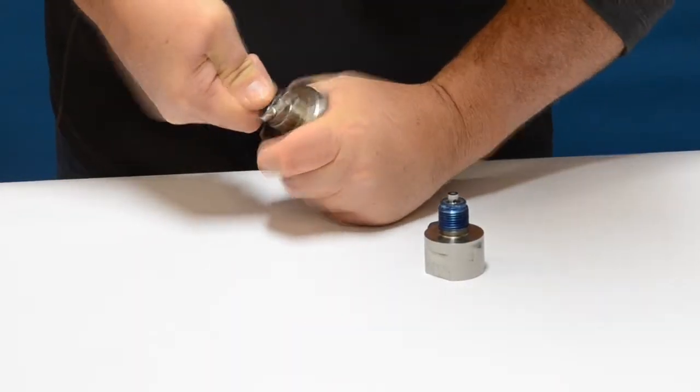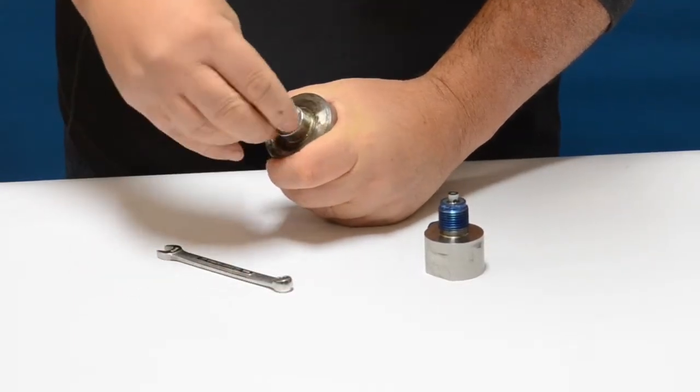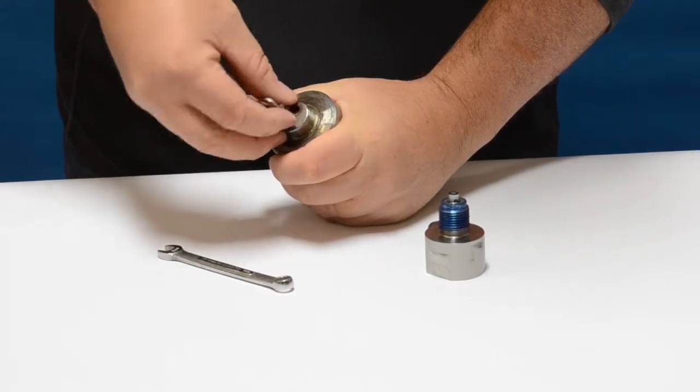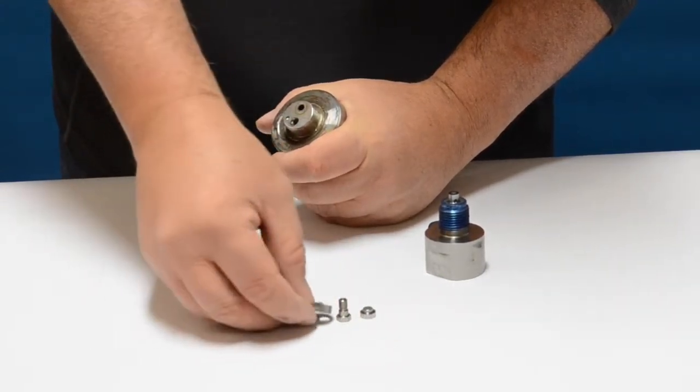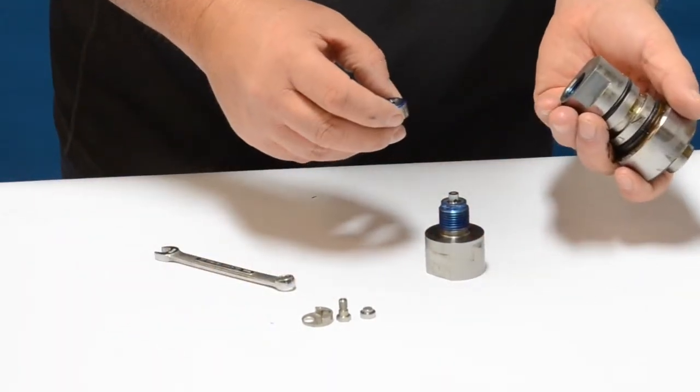Alright, let's get started. To begin, you're going to need an 8 millimeter wrench and you're going to put that wrench to the check valve screw. Once you get it loose, undo it with your hand and what's going to come loose is the low pressure poppet, the screw, and the poppet retainer.